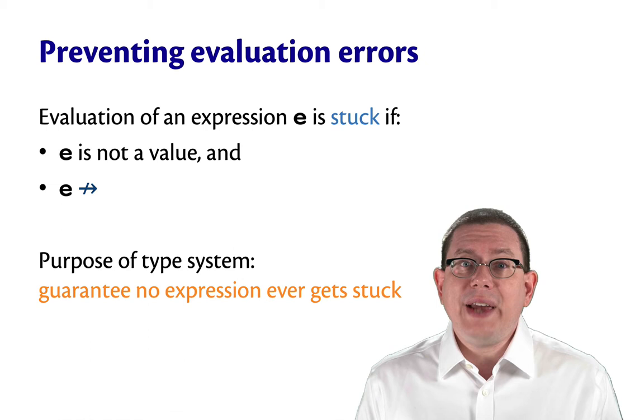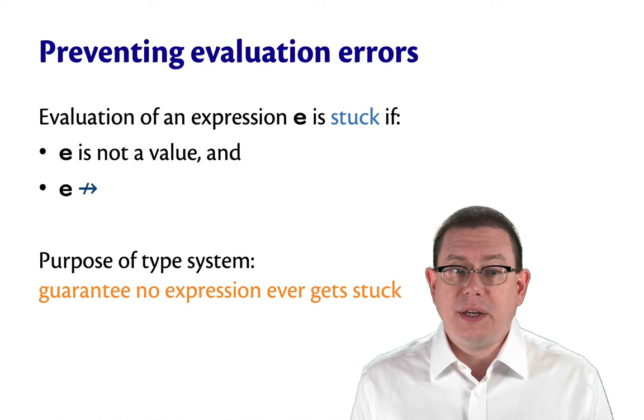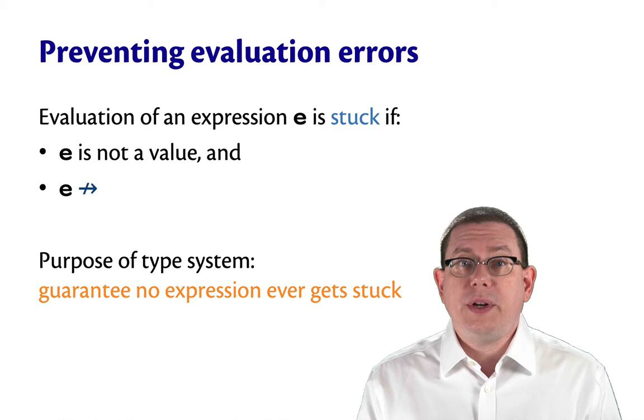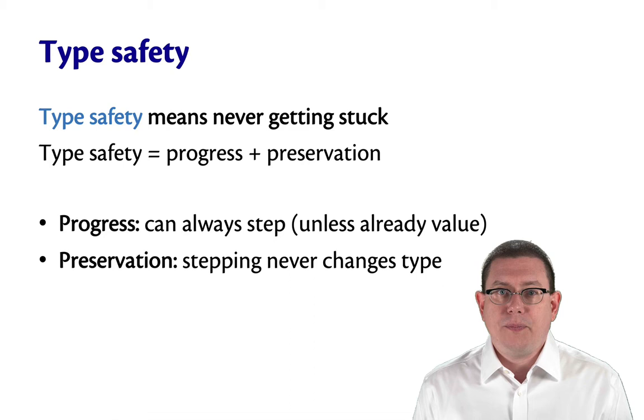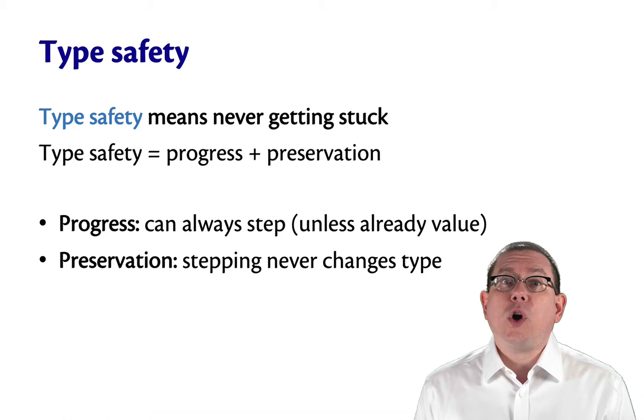So a little more precisely, the goal of a type system is to guarantee that no expression gets stuck during evaluation. There's a name for this. It's called type safety. Type safety means never getting stuck. And you can actually divide type safety up into two pieces. Those pieces are called progress and preservation.